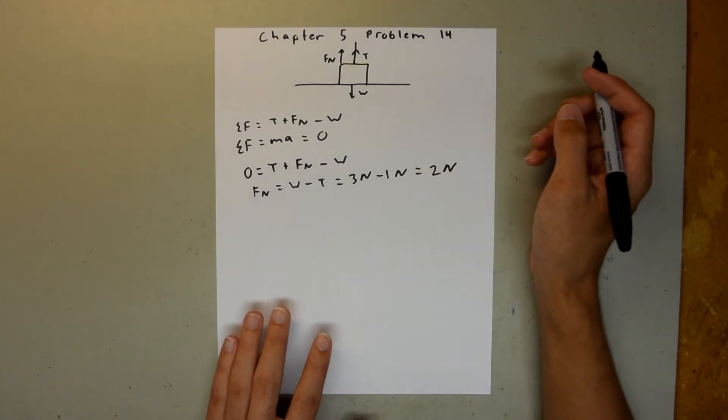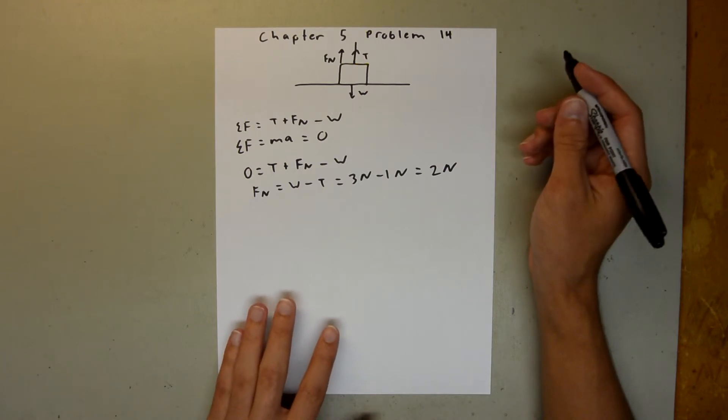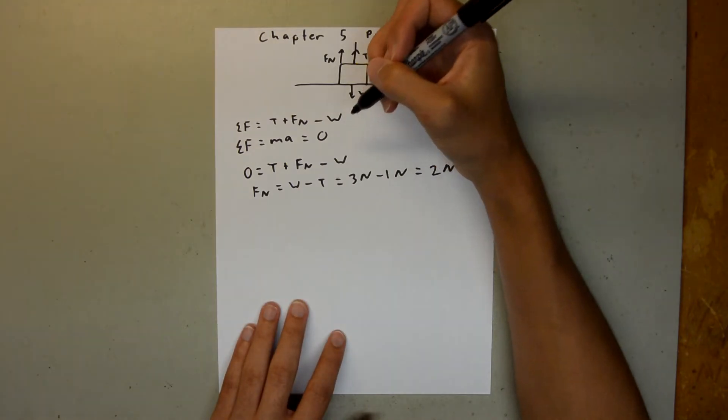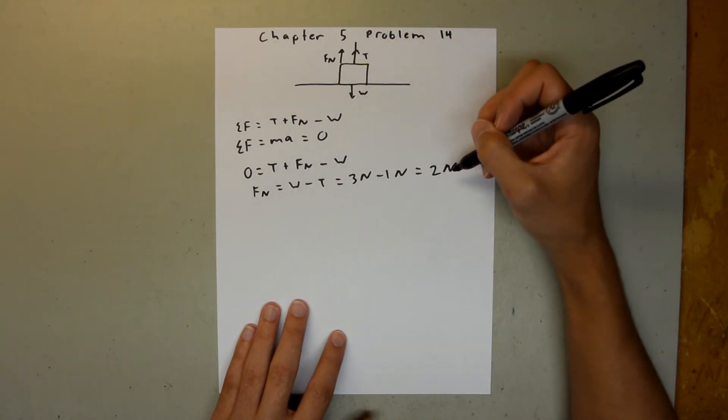Now, we are asked for the force of the block on the table. We know that the force of the table on the block is two newtons.